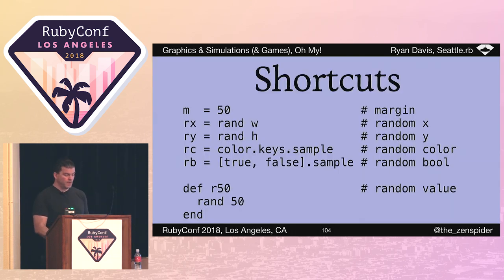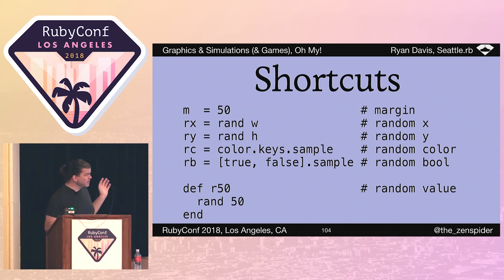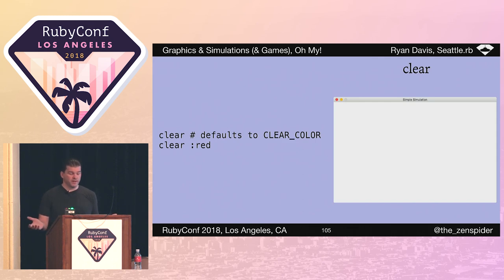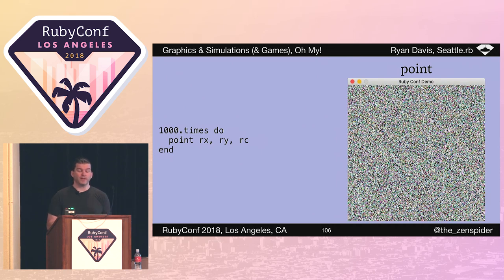Now, how do you draw things? For the sake of making these slides readable, I've defined default values: a margin of 50, random X and Y, random color from all the registered colors, a random bool biased towards false, and an r50 method that gets a random value up to 50. Clear: not much to say here — first thing we almost always want to do on each turn is clear the screen, but this happens by default when you use Simulation. Point is the most basic building block, but not necessarily something you'll directly use a lot. Here we're making a thousand random points on each turn with random colors, which just basically becomes noise.